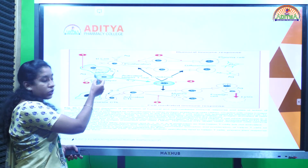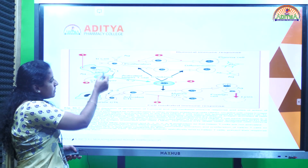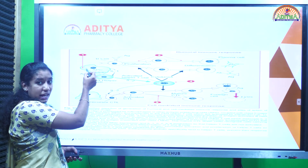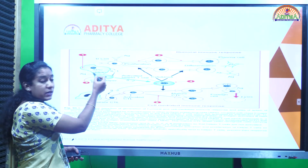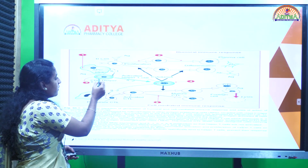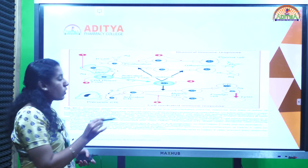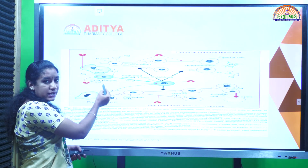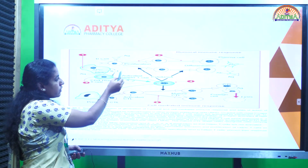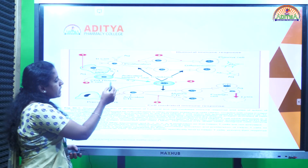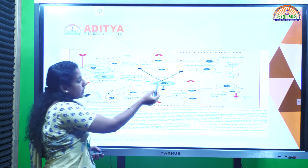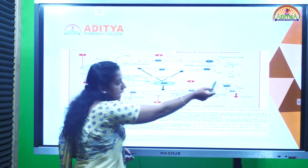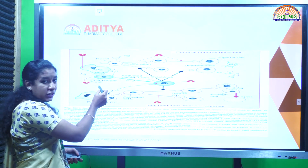Whenever an antigen enters, it will be processed by the antigen presenting cell, which couples with the major histocompatibility complex. That antigen is then presented to the CD4 helper T cells. The CD4 helper T cells are activated in the presence of IL-1 (interleukin-1), then activate cytokines in the presence of interleukin-2. These cytokines undergo proliferation and differentiation into antibodies, which identify and lyse the antigen. This is the humoral immune response.